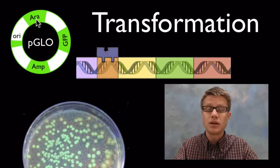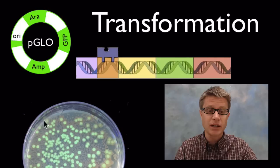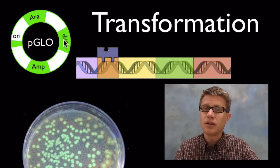Next they have an arabinose operon. That's almost like an on-off switch. I'll talk about that in a second. And then they have a glowing fluorescent protein. This is a gene they took out of a jellyfish that causes them to glow green. So if you do this right, your bacteria are going to glow green under ultraviolet light.